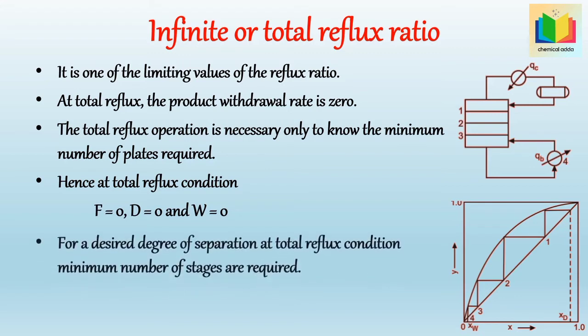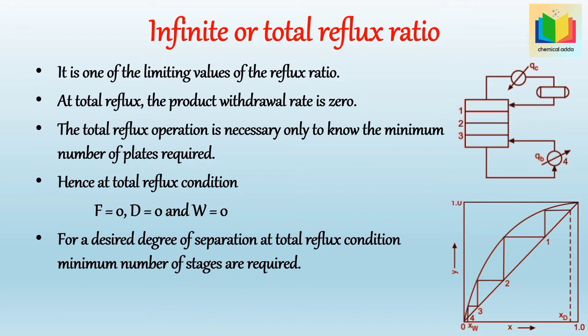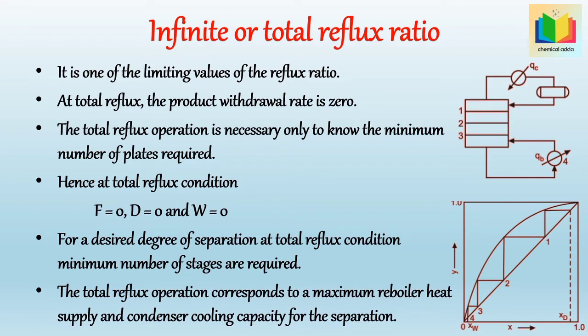At total reflux, the minimum number of stages are required for a desired degree of separation. Because F and D equal zero, the slope of the operating lines of both sections becomes unity, and hence the operating lines of both sections coincide with the diagonal. Total reflux corresponds to maximum reboiler heat supply and condenser cooling capacity, because product withdrawal rate is zero, stages decrease, and liquid and vapor hold-up increases.